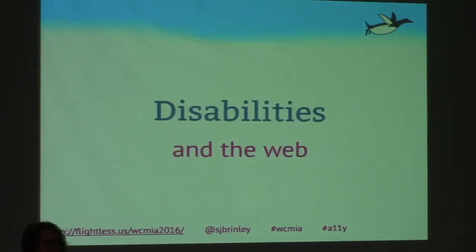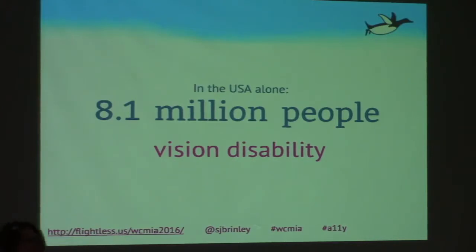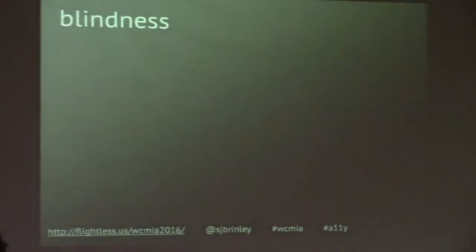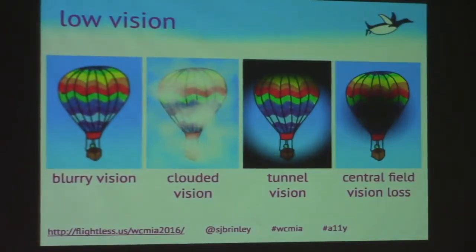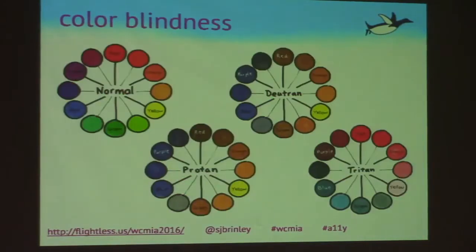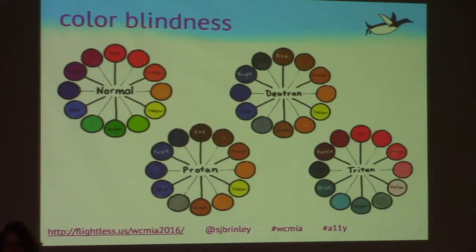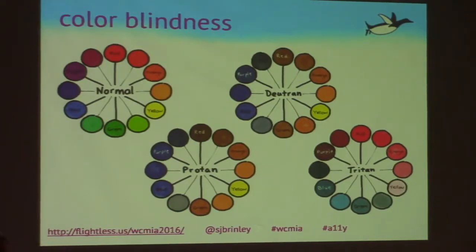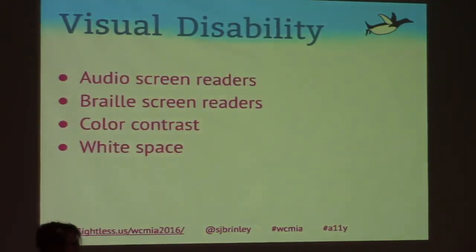Let's talk specifically about how disabilities affect the way people use the internet. First, visual disability: 8.1 million people in the US are visually disabled; 100,000 of those are blind. The most common conditions include blurry vision, clouded vision, tunnel vision, and central field vision loss. Color blindness affects about 8 to 10 percent of men, but only about 0.5 percent of women. The three main types are deuteranopia, protanopia, and tritanopia. People with visual disabilities can be assisted with audio screen readers, braille screen readers, color contrast, and white space.